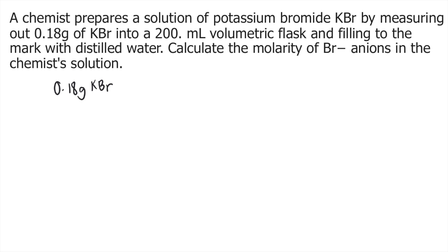First, you need to convert grams of KBr into moles of KBr using the molar mass of KBr. If you look at your periodic table, the molar mass of potassium is 39.10 grams per mole and the molar mass of bromine, Br, is 79.90 grams per mole. If you add the two, you get the molar mass of KBr, which equals 119 grams per mole.